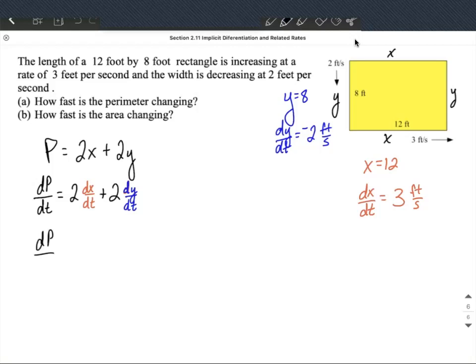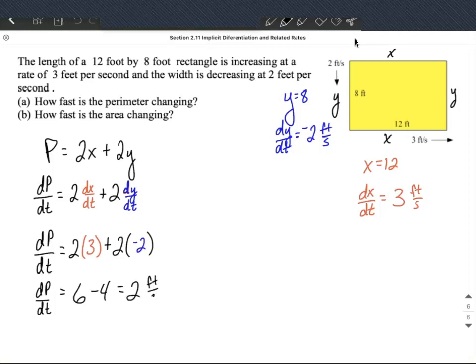To figure out how quickly this perimeter is changing, let's fill in the information we collected over on the right-hand side. So dx/dt was positive 3, dy/dt was negative 2, and this works out to be dP/dt is going to be 6 minus 4, makes a positive 2, so it'll be changing at a positive 2, and our units are feet per second.